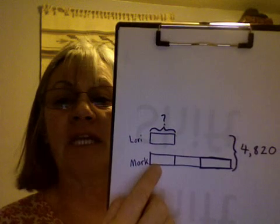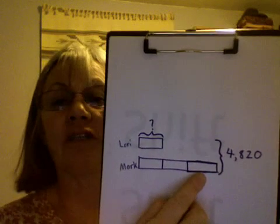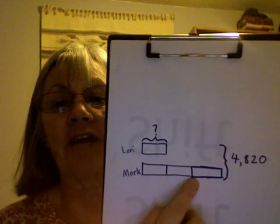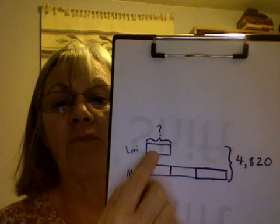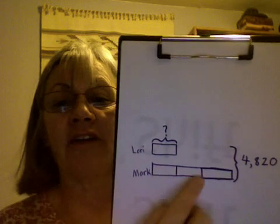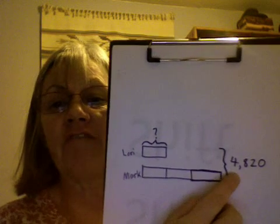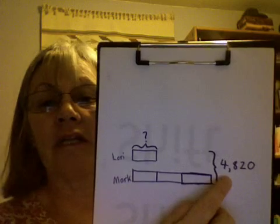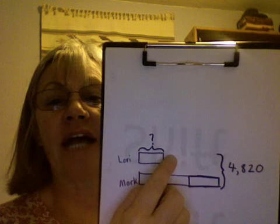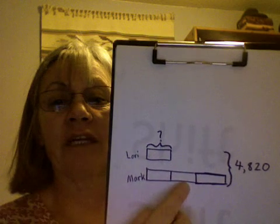If we count all the parts involved here, we can see there are three that belong to Mark and one belonging to Lori. That makes four parts altogether. So, to find out how much one part would be, we need to divide 4,820 by four. Then we would know exactly how much Lori has, and then we would know that Mark has that much three times.